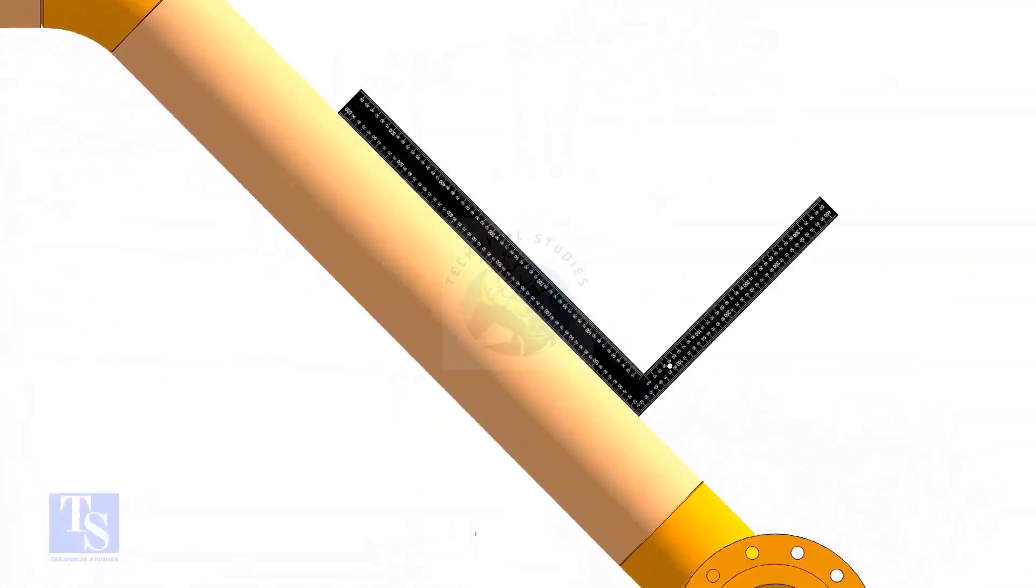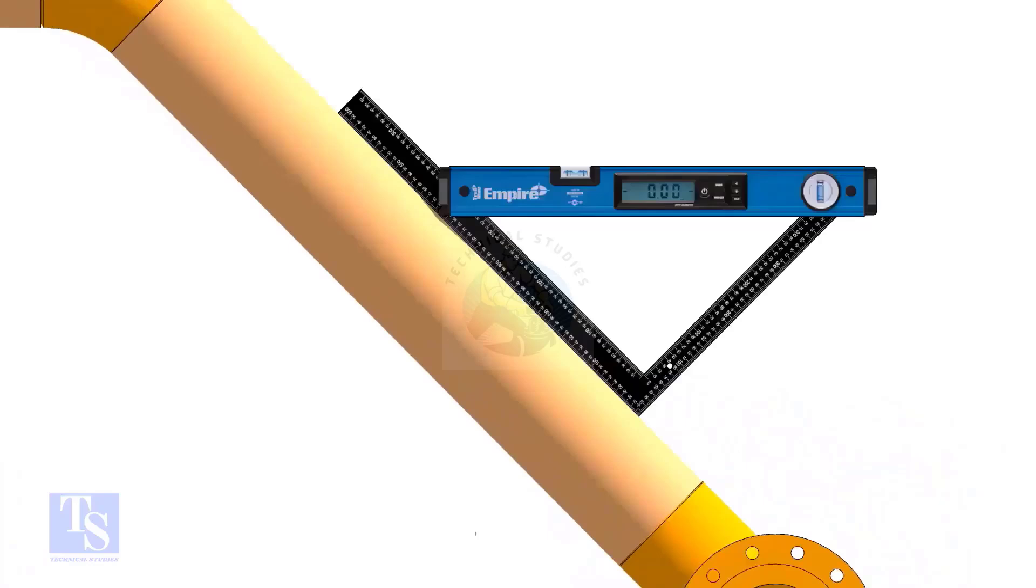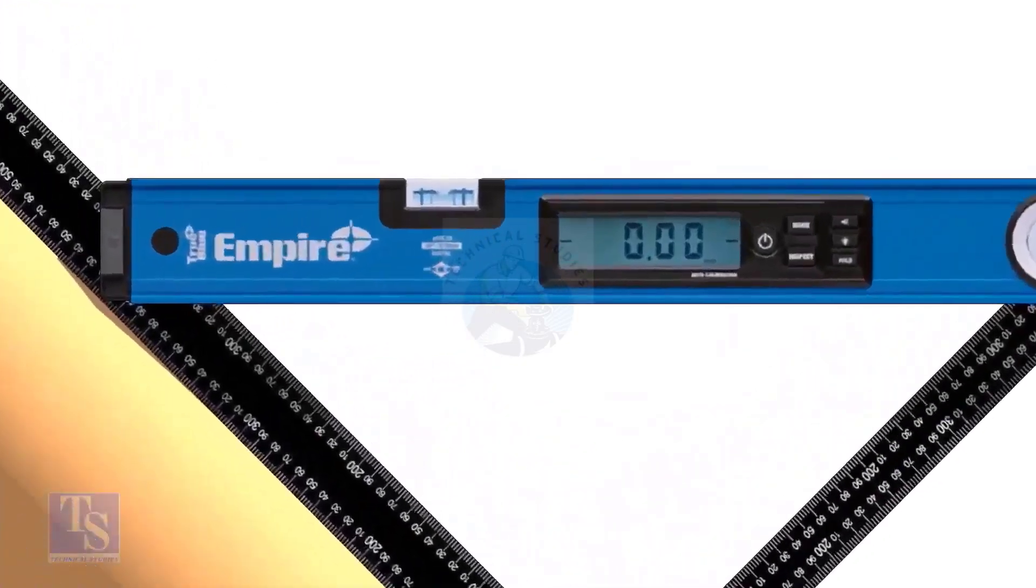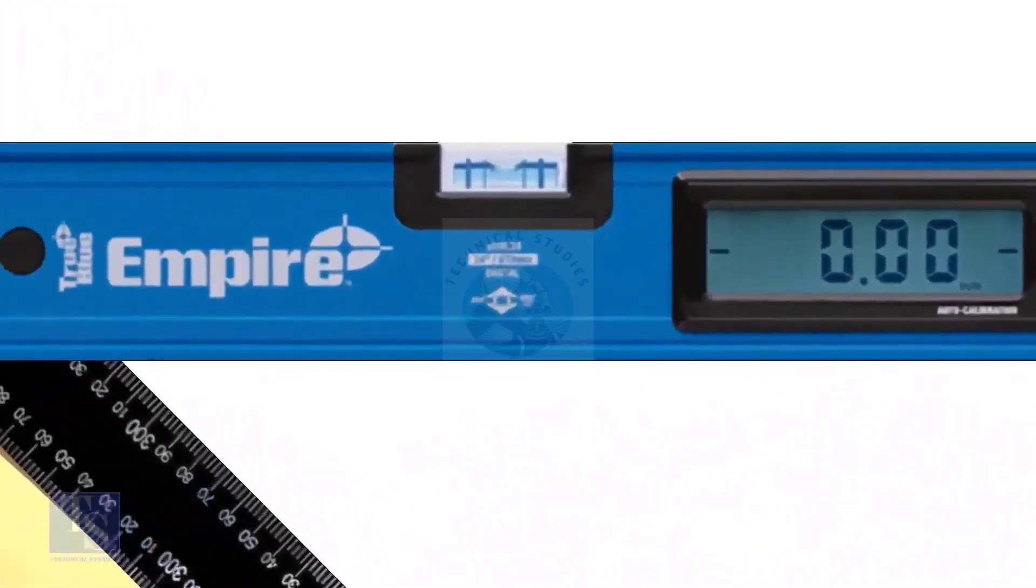Let us check the degree of this existing pipe spool. Put a large set square or a right angle on the pipe as shown. Hold a spirit level on the right angle perfectly horizontal.